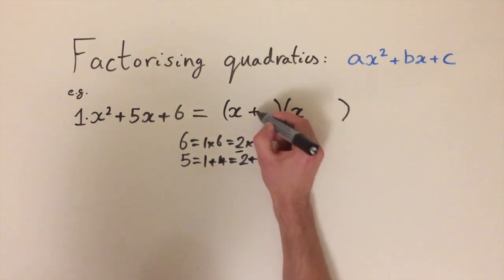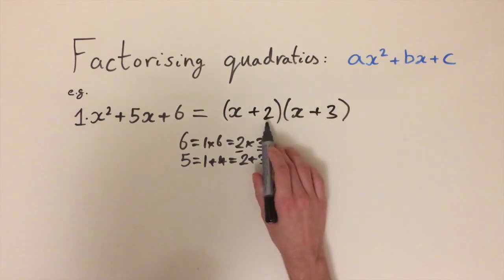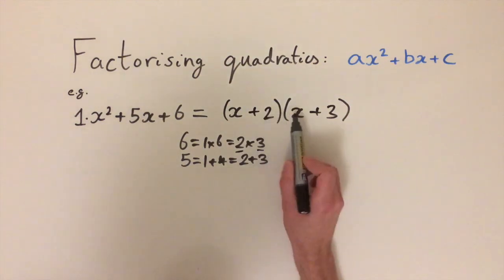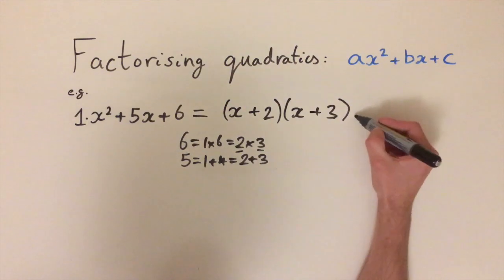So if we put plus 2 and plus 3, then we can check this is right by multiplying out. We're going to get 2 times 3, that's going to give us a 6, and then 2x plus 3x, that's 5x. So this is the factorized form.